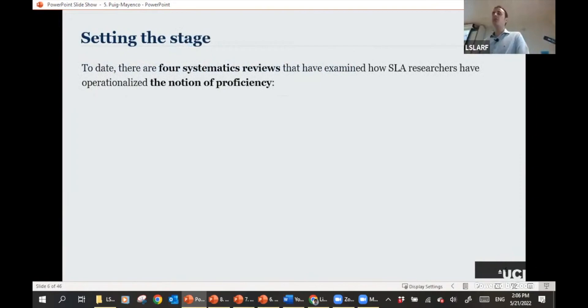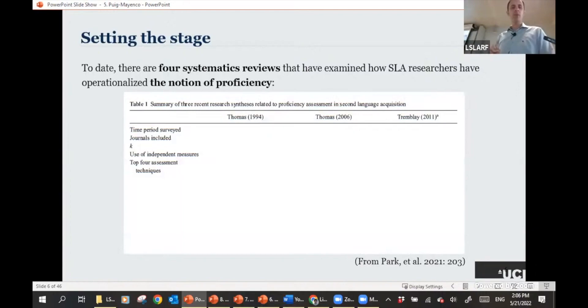So to date, there are four systematic reviews, at least to the best of my knowledge, that have examined how SLA researchers have operationalized the notion of proficiency in their studies. And I've just screenshotted here a very nice table taken from Park et al. 2021, very recently published in Language Learning, that kind of summarizes the finding of the first three systematic reviews. The one by Thomas in 1994 did a systematic review of how people had used operationalized proficiency. And what they did find is that out of the studies that they reviewed, 157 in total, only 36.3% of those studies had actually used independent measures of proficiency.